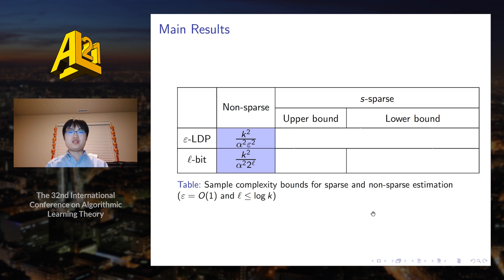Now I will introduce the main results. Existing literature has shown that for both LDP and communication, the sample complexity increases quadratically with the potential domain size K. In our work we showed that with S-sparse assumptions for LDP, we obtain a sample complexity very similar to the non-sparse one with K replaced by S and an additional factor of log K over S.